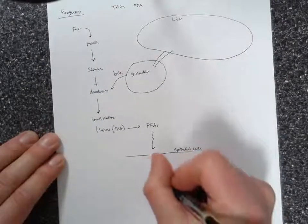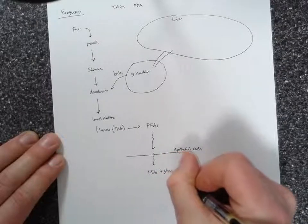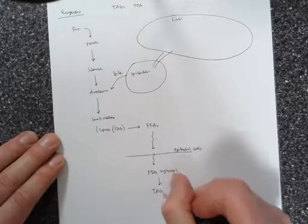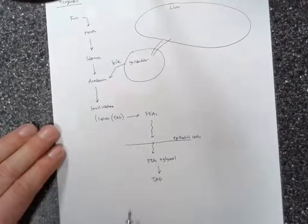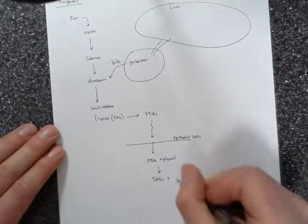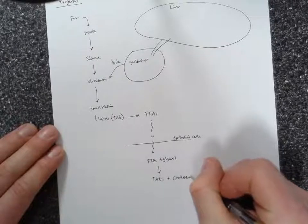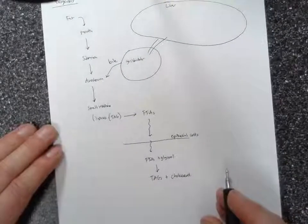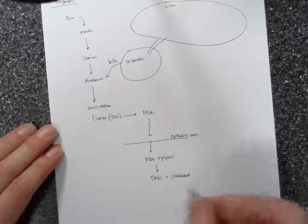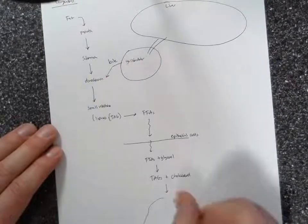And then in the epithelial cell, these free fatty acids are going to combine with glycerol to be remade or repackaged into triacylglycerols. And then these tags are then combined with cholesterol and cholesterol esters. I'm just going to write cholesterol here. And these are packaged into what are known as chylomicrons.